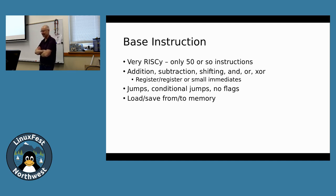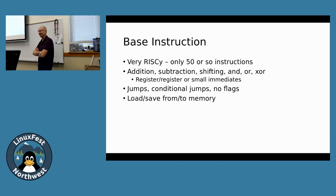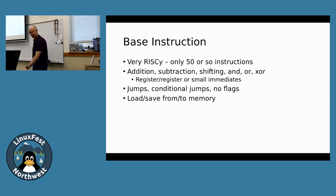Basic arithmetic: addition, subtraction, shifting, AND, OR, XOR — all done register-to-register or with small immediates. Then there are jumps, conditional jumps, no flag register in the core set, and load and store from and to memory. That's really all you need for a basic instruction set. Even in the GCC library they've got standard libraries for implementing everything else — multiplication, division, floating point — in just this set of instructions. It's just not quite as fast because it's implemented in software.